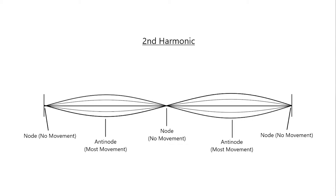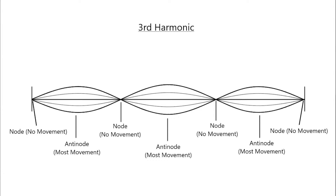The second harmonic is double the frequency and half the length of the fundamental. The third harmonic is three times the frequency and a third the length of the fundamental. Although these images show what each individual frequency looks like, in reality the string is vibrating at all of these frequencies simultaneously to varying degrees.